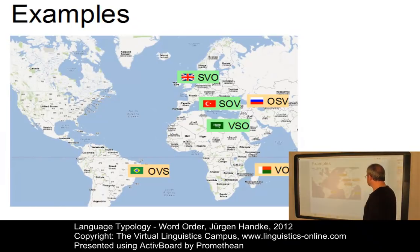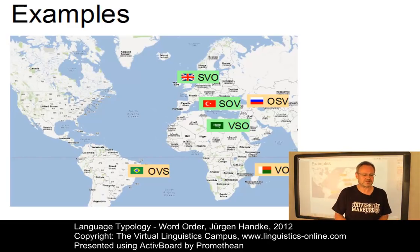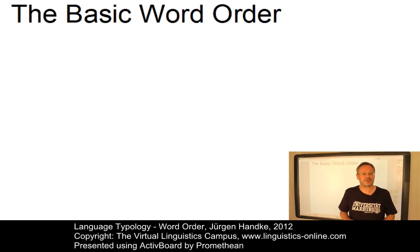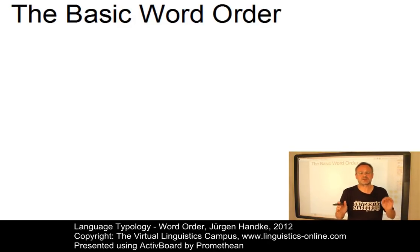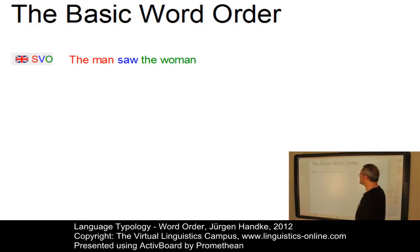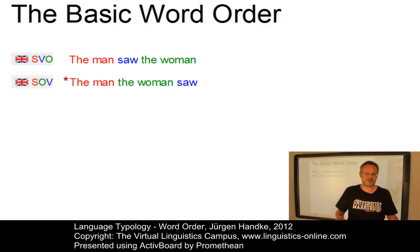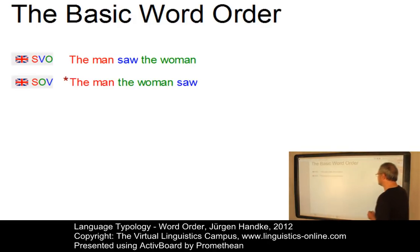So these are the main patterns — SVO, SOV, and VSO constitute the majority of the languages of the world. But how do we establish the basic word order of a language? How do we find out whether a language is SVO, SOV, etc.? Let's illustrate this using present-day English. We know that English typically has SVO patterns — a sentence like 'the man saw the woman.' SOV is impossible in present-day English; you wouldn't find an example that exhibits this word order pattern.